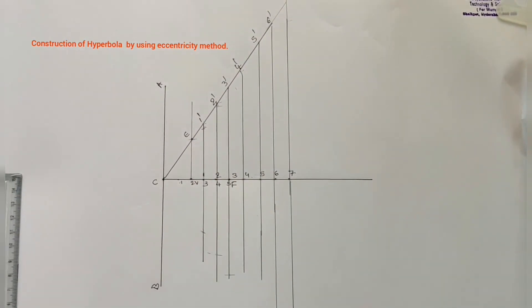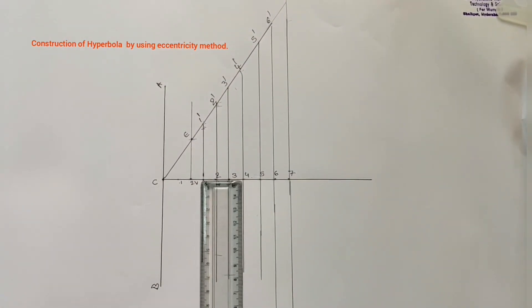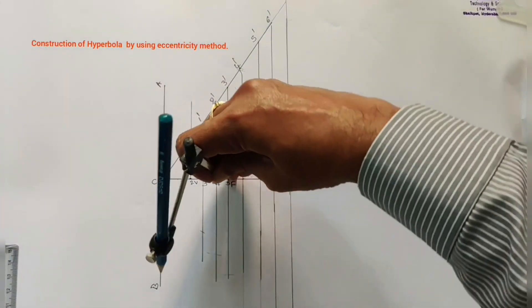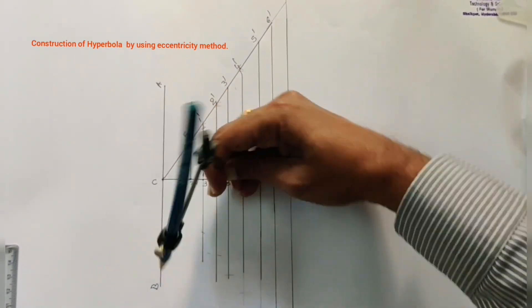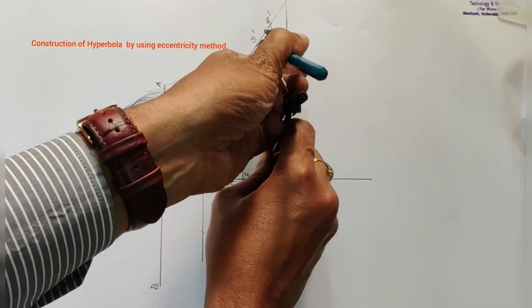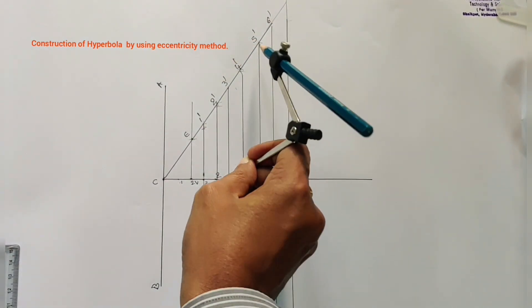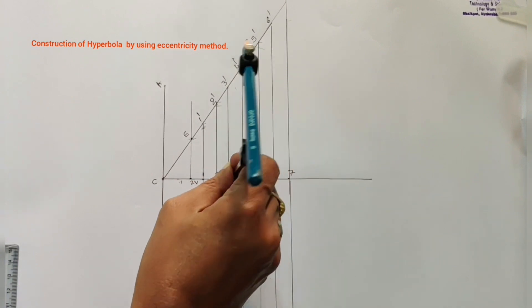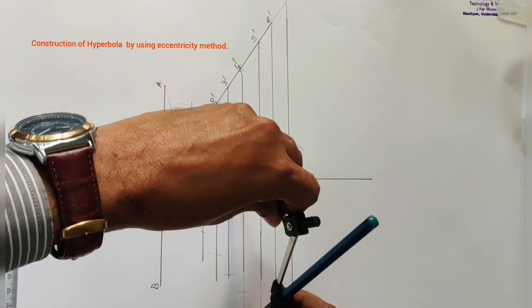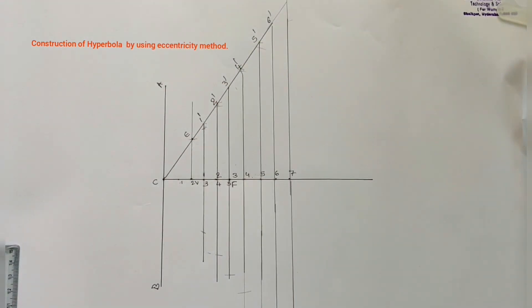Then four four dash as a radius, F as a center, draw an arc on four four dash line. Then five five dash as a radius, F as a center, draw an arc on five five dash line above the axis as well as below the axis. As I said earlier, we have to take at least five points. With these five points, we can draw hyperbola curve.